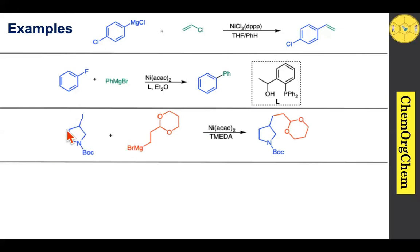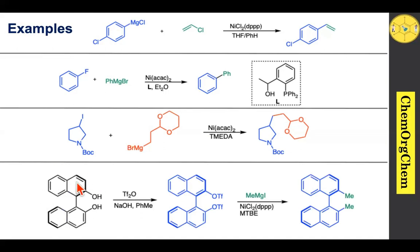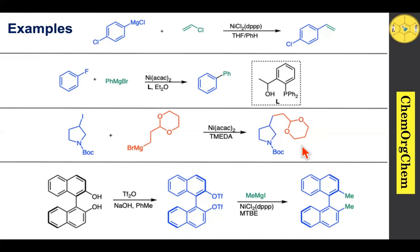In another example, an aliphatic iodo compound and a Grignard reagent are coupled in the presence of nickel catalysis to produce the carbon-carbon coupling product. Another example involves BINOL reacting with triflic anhydride to produce a corresponding compound; using methyl magnesium iodide with nickel gives the methylated product. Notably, when a chiral ligand is used, the corresponding product can be obtained in high enantioselectivity.